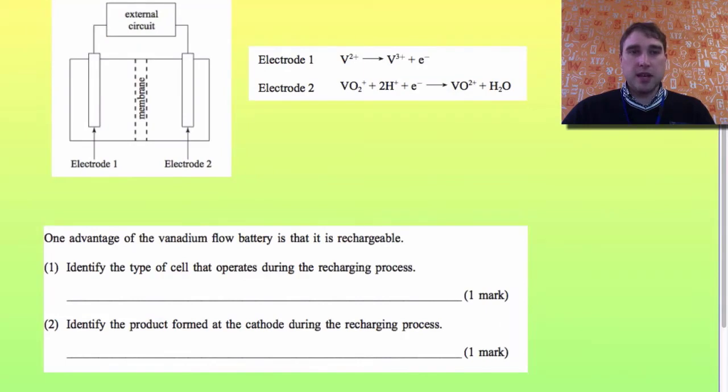The last part of the question says one advantage of the vanadium flow battery is that it's rechargeable. Identify the type of cell that operates during the recharging process. So if it's a galvanic cell when it is discharging, that means it's going to be an electrolytic cell when it is recharging. So our answer down here is electrolytic.